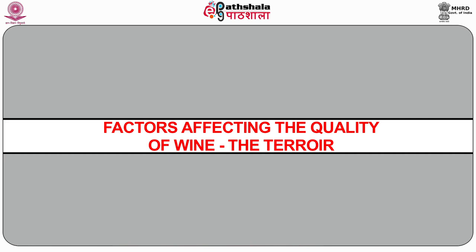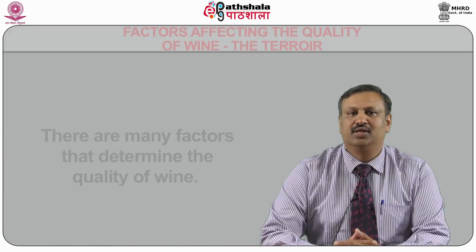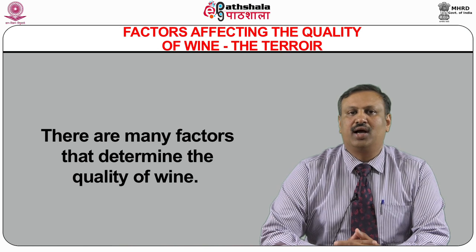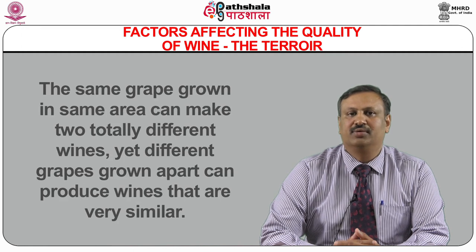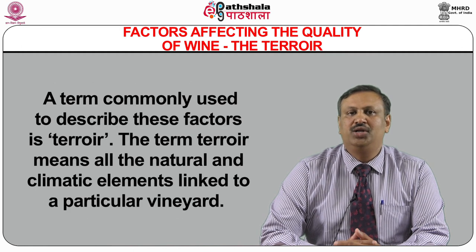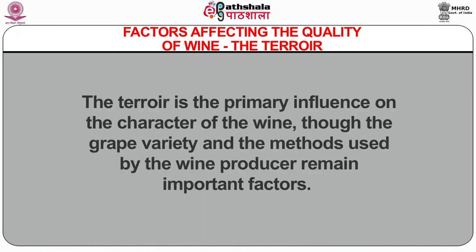We will discuss the factors affecting the quality of wine. The first one is terroir. There are many factors that determine the quality of wine — the same grape grown in the same area can make two different wines, yet different grapes grown apart can produce wines that are very similar. The term terroir means all natural and climatic elements linked to a particular vineyard, and it is the primary influence on the character of the wine.